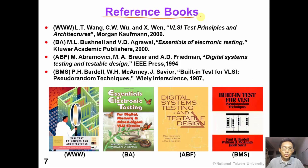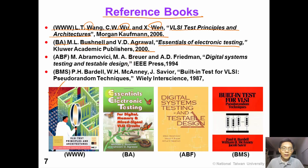In this course, we will use four different reference books. The first one is referred to as the Triple W textbook because the authors are Wang, Wu, and Wing. The title is VLSI Test Principles and Architecture, published by Morgan Kaufmann in 2006. This is a very modern textbook that covers advanced research topics in this area. The second book is by Bushnell and Agrawal, Essentials of Electronic Testing, published in the year 2000. This is a very good textbook with rich content on important topics.